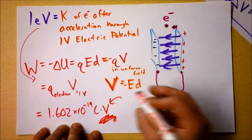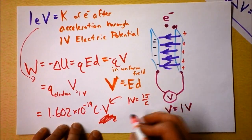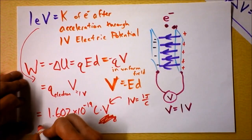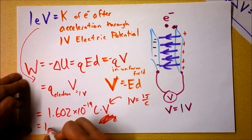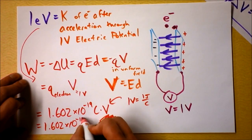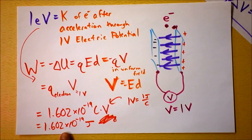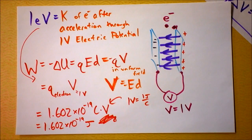One volt equals one joule per coulomb, so a coulomb-volt is simply a joule. This energy is an incredibly small energy: 1.602 × 10⁻¹⁹ joules. If you had a very small slice of apple, you could lift it by one meter with that amount of energy — but it would have to be an incredibly tiny piece.